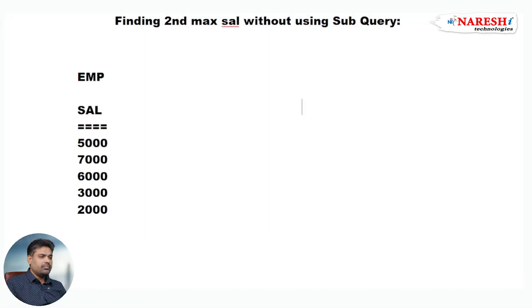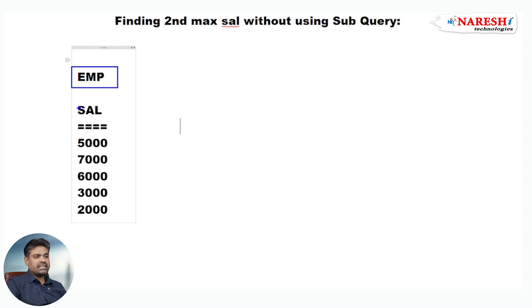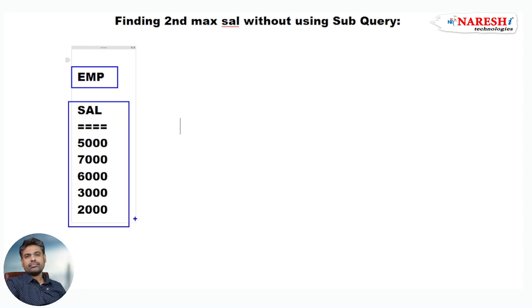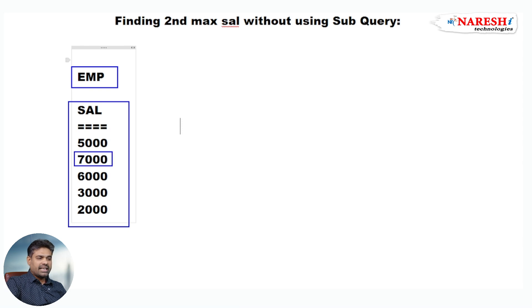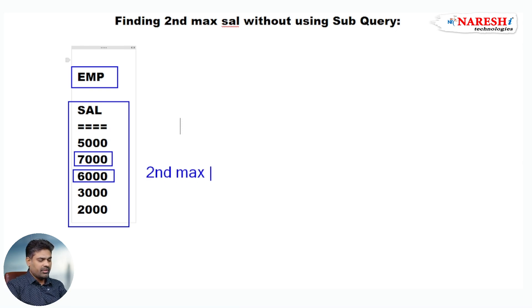I want to find second maximum salary without using a subquery. For example, here the EMP table is having one column — the salary column. According to this data, 7000 is the maximum salary and 6000 is the second maximum salary. We want to find this second maximum salary without using a subquery. That is our requirement.